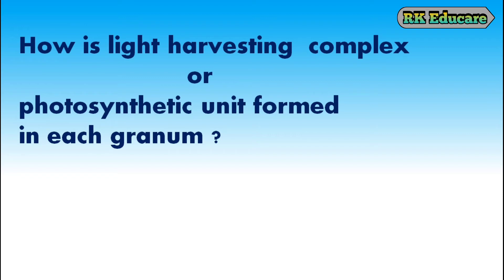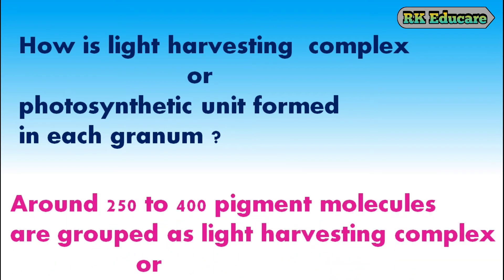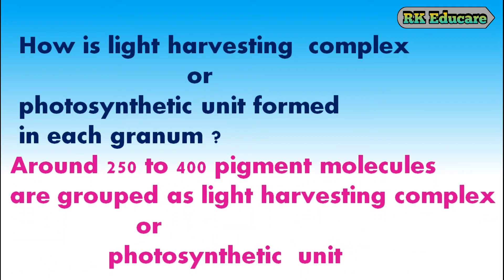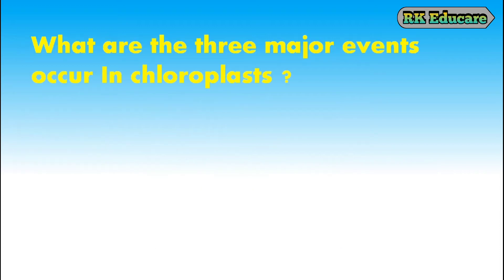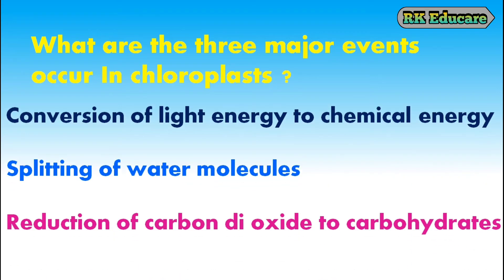How is the light harvesting complex or photosynthetic unit formed in each granum? Around 250 to 400 pigment molecules are grouped as a light harvesting complex or photosynthetic unit. What are the three major events that occur in chloroplasts? Conversion of light energy to chemical energy, splitting of water molecules, and reduction of carbon dioxide to carbohydrates — these are three major events that occur in chloroplasts.